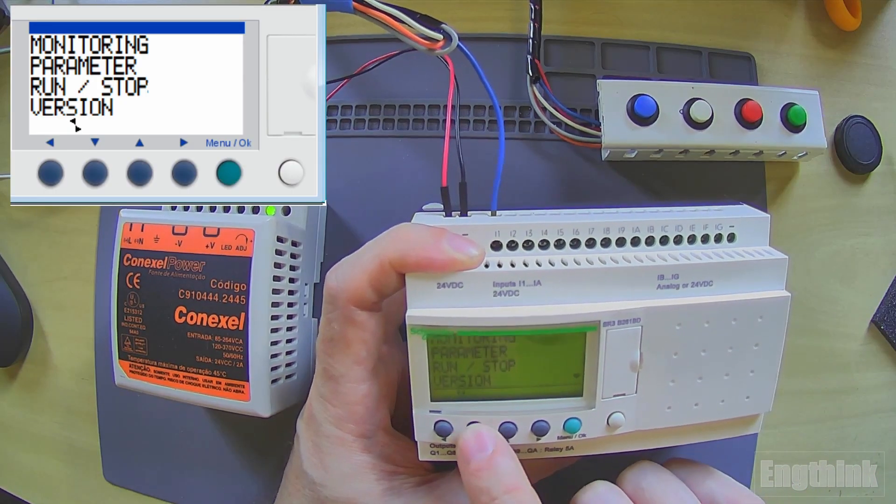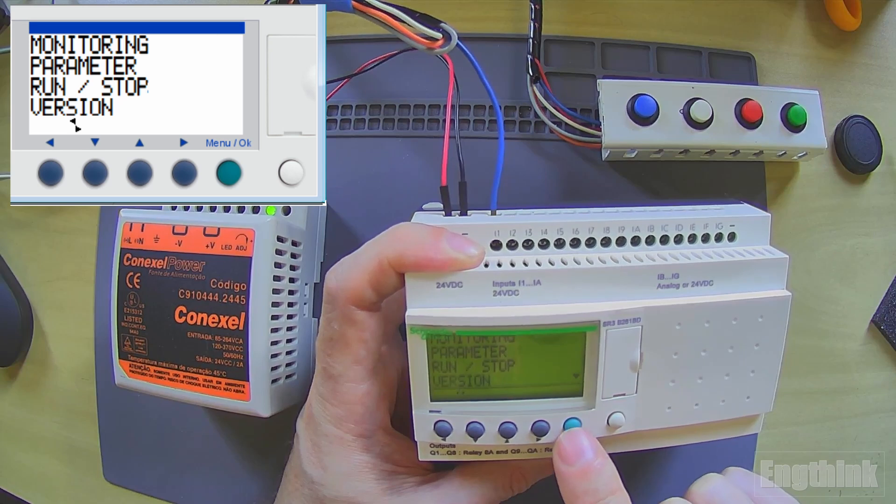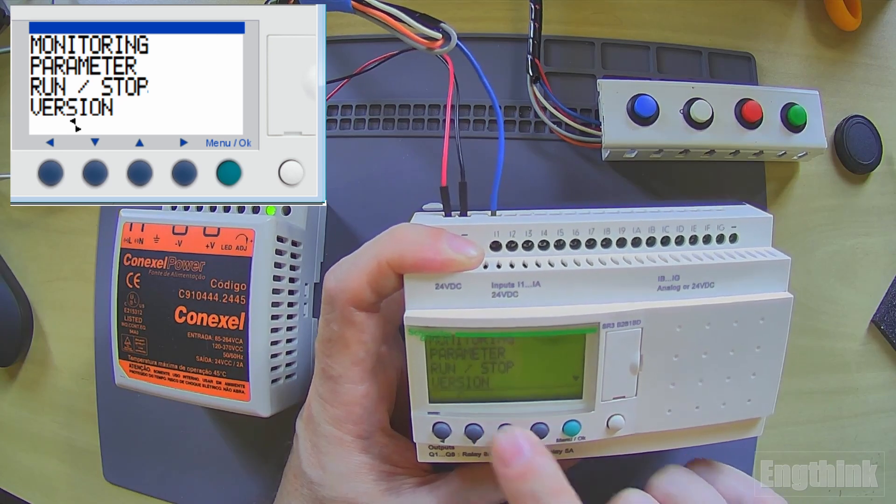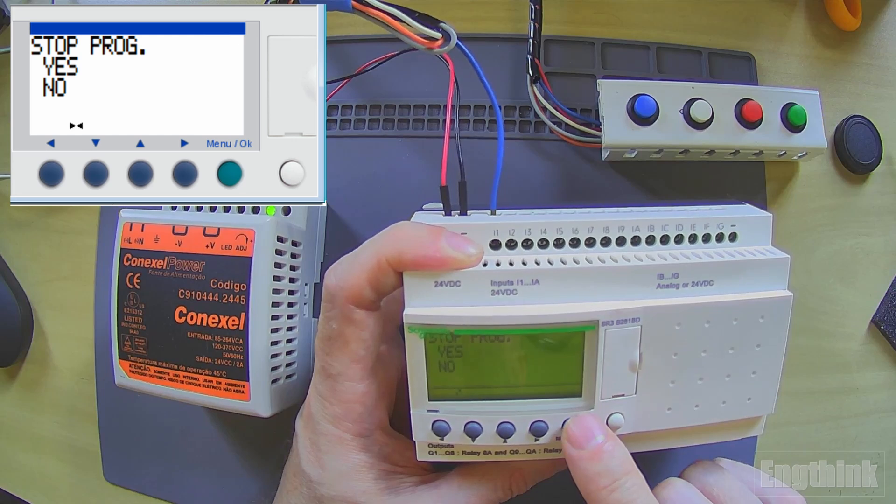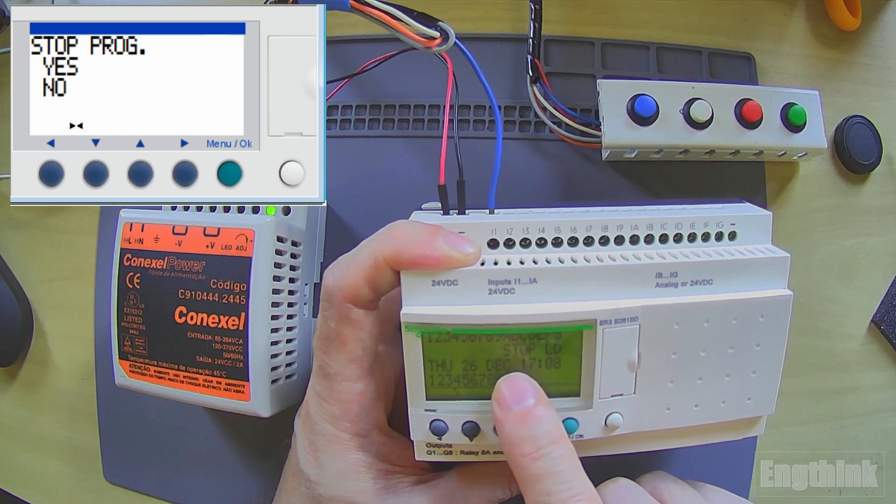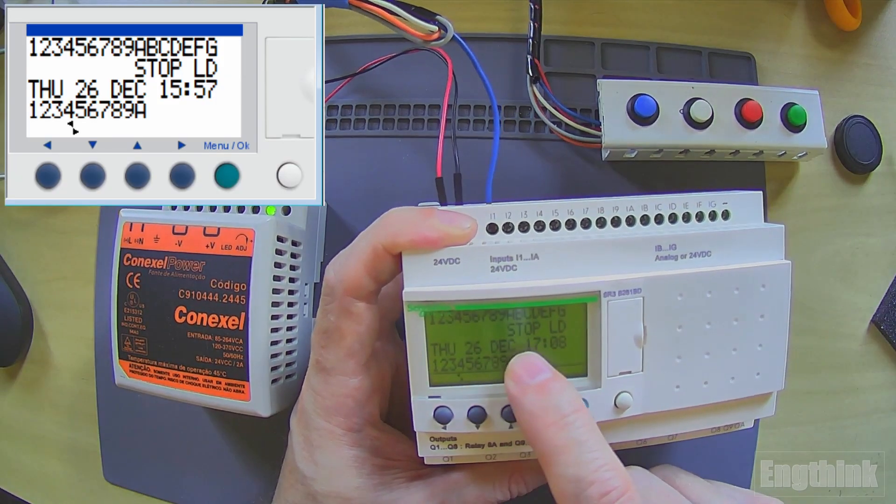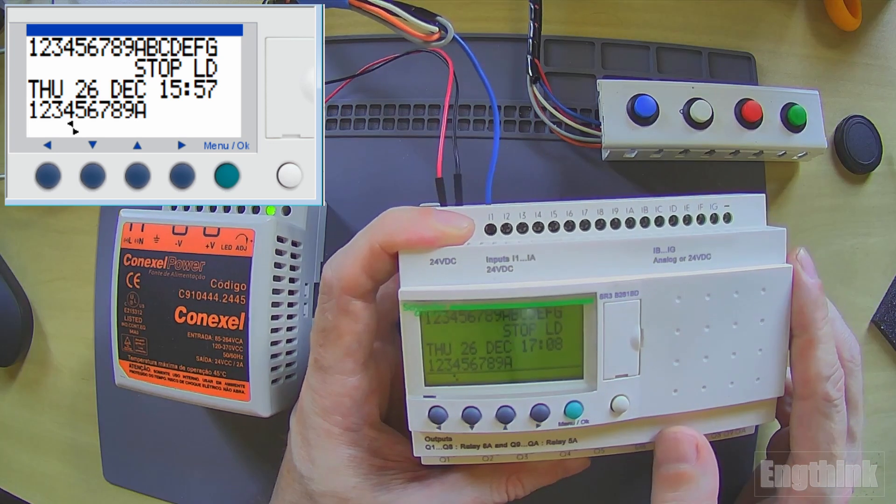Let's go to the menu and select to stop the program. They will request confirmation. Let's press yes. We can already see that the controller is in stop mode.